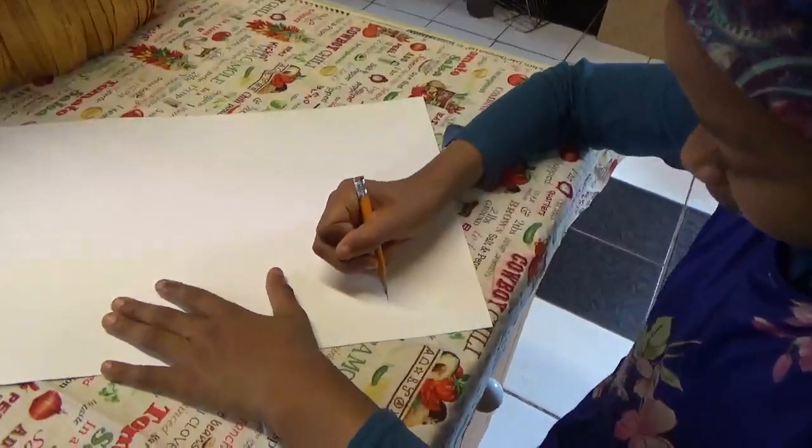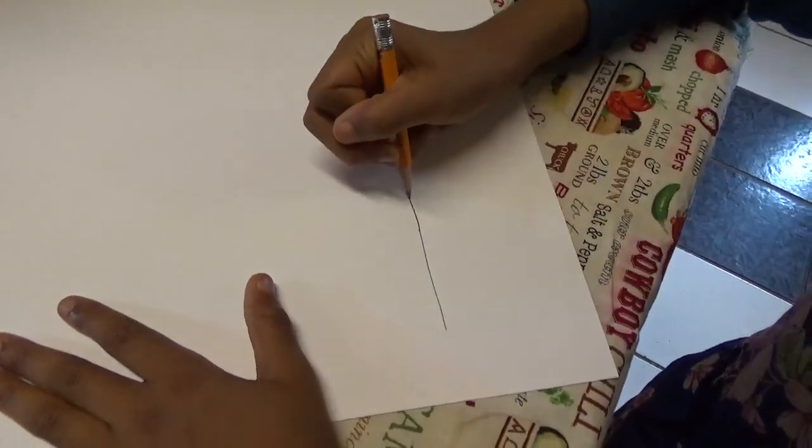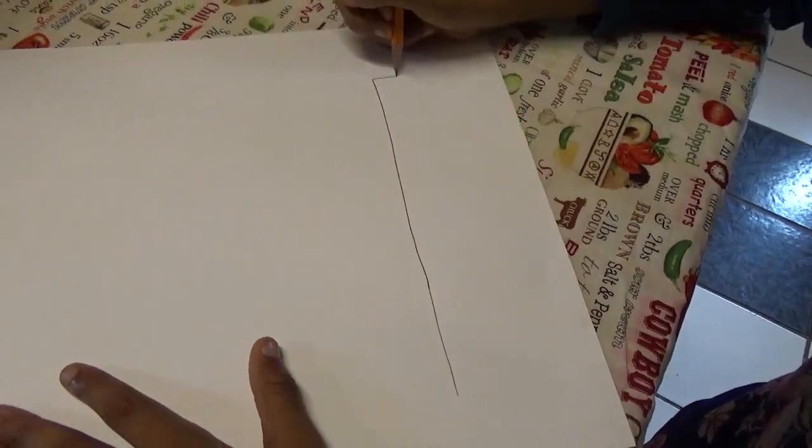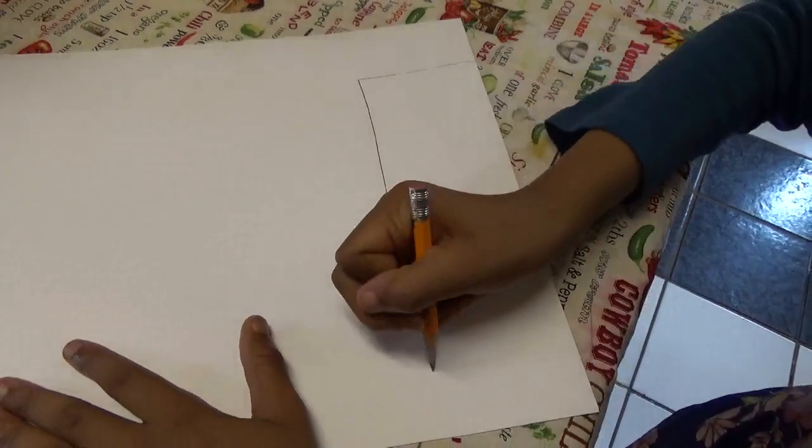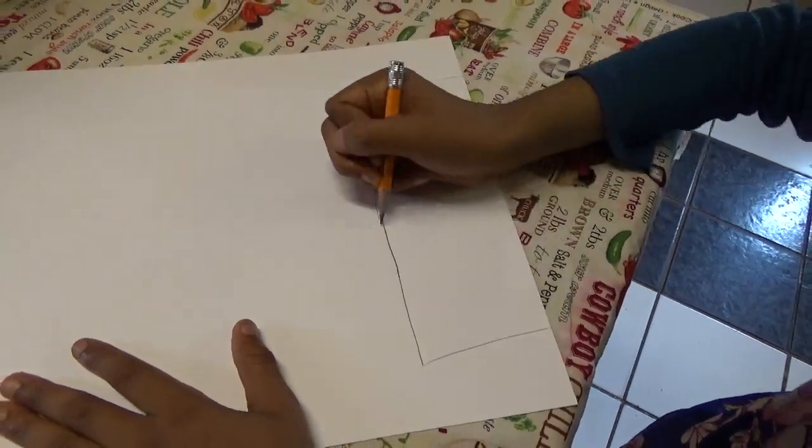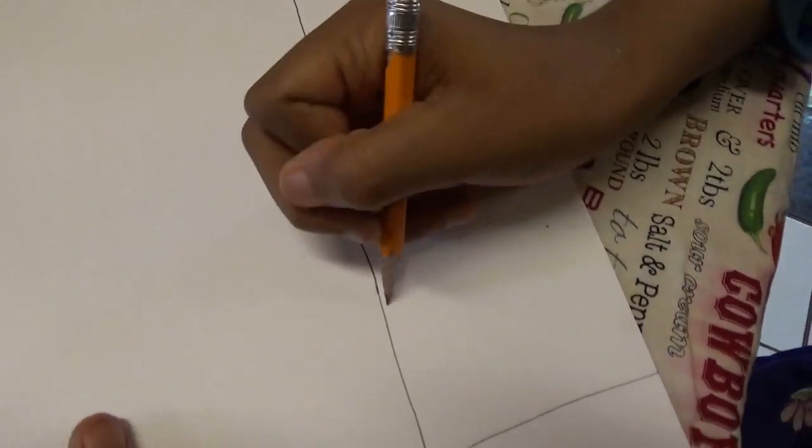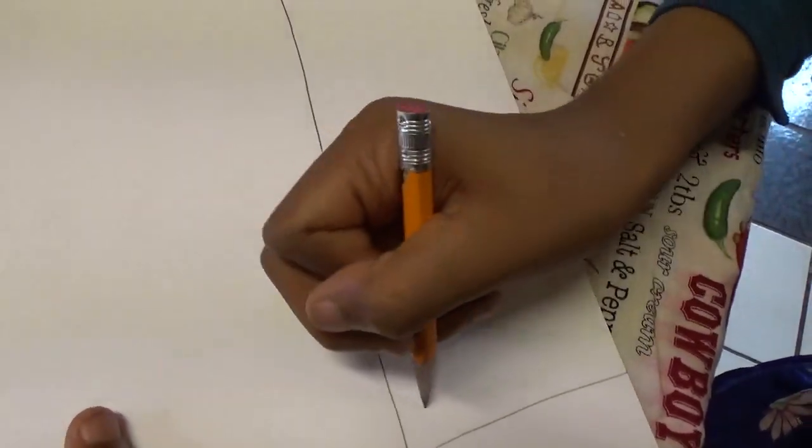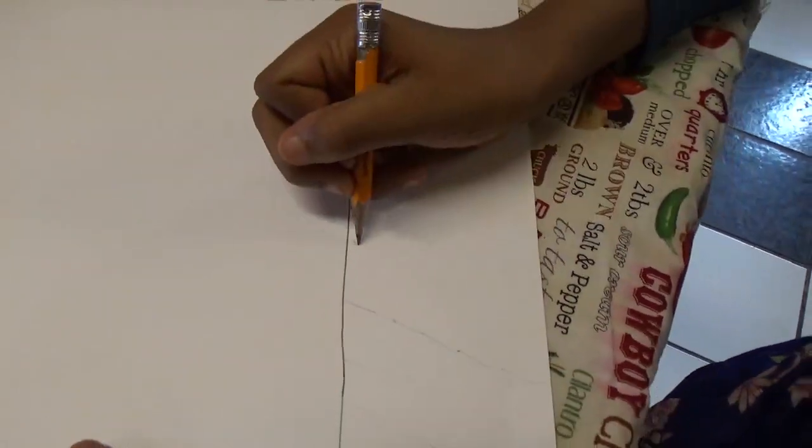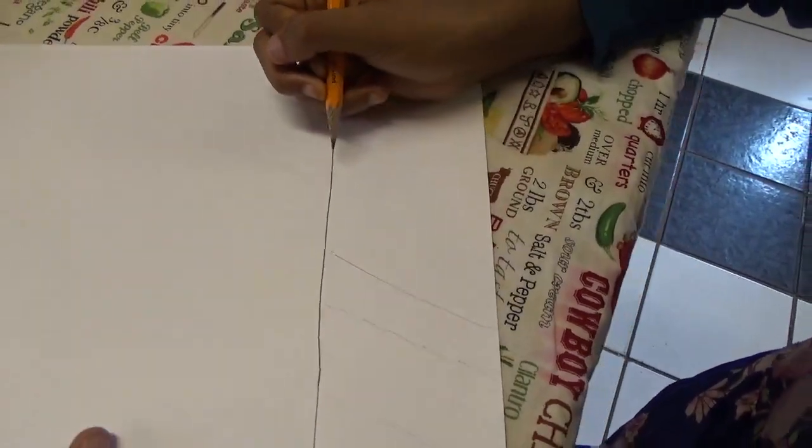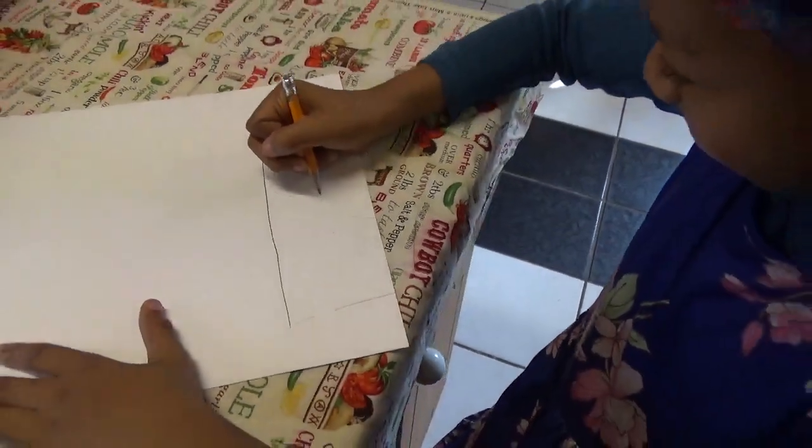The first thing I'll draw is a careful line. Then we decorate it. One side has lines and one side has zigs.